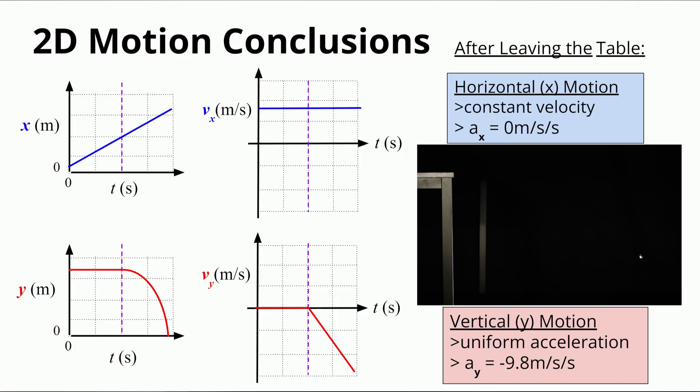Now you can put all the pieces together. While an object is moving in two dimensions through the air, it moves with a constant horizontal speed and a constant negative vertical acceleration. Projectile motion is just a combination of a constant velocity problem and a uniform acceleration problem. Once students have this foundational understanding, they're ready to jump into a discussion of specific traditional projectile problems, including projectiles launched at an angle.